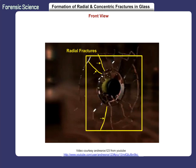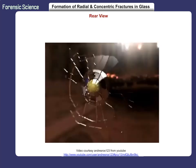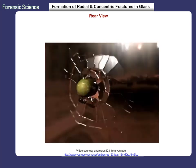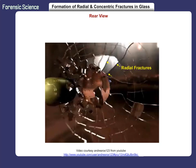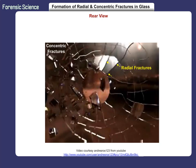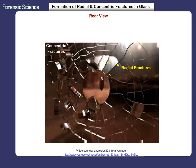With the initial impact, the glass bends forward and the radial fractures begin to form as they radiate from the center. This view shows the opposite side of the glass. As the bullet crowns through the glass, it is pushed in the direction of the force. Notice the radial fractures moving away from the center of the impact and the concentric fractures forming a circular pattern.